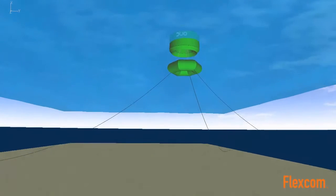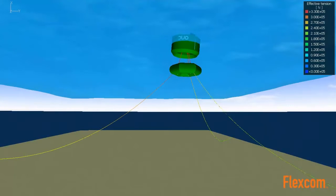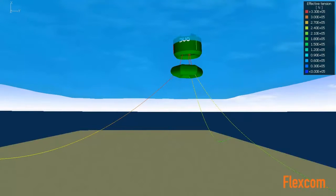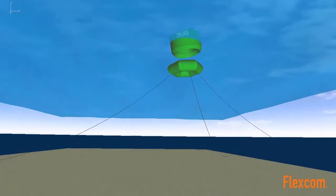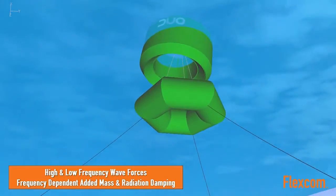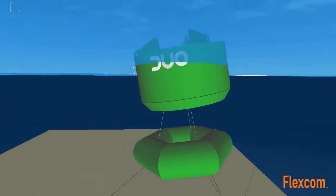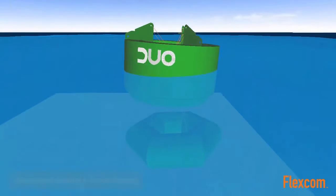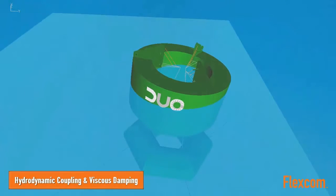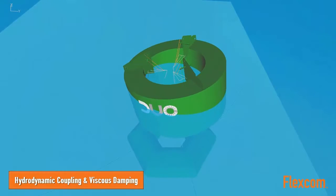FlexCom uses detailed coupled analysis to model wave energy converters such as Duo. The software can model both high and low frequency wave forces, including frequency-dependent added mass and radiation damping terms. FlexCom also supports hydrodynamic coupling between adjacent bodies and provides a detailed viscous damping model.